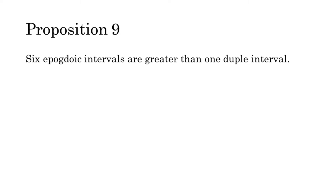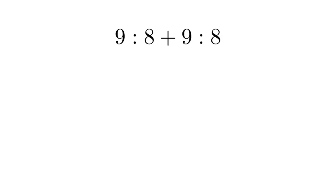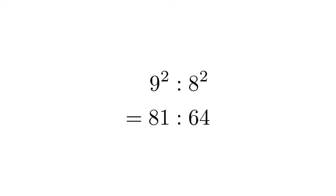Six epigdoic intervals are greater than one duple interval. This proposition is simple, but we're going to spend a long time talking about it. It asserts that if we combine 6 epigdoic or 9 to 8 intervals, we get a compound interval that is larger than the duple. We can easily check this using arithmetic. We discussed earlier an arithmetic shortcut for adding two ratios together: we multiply their antecedents and then their consequents. If I do this adding one ratio to itself, for example 9 to 8 plus 9 to 8, the result is 9 squared to 8 squared, or 81 to 64. So the sum of two 9 to 8 intervals is 81 to 64.